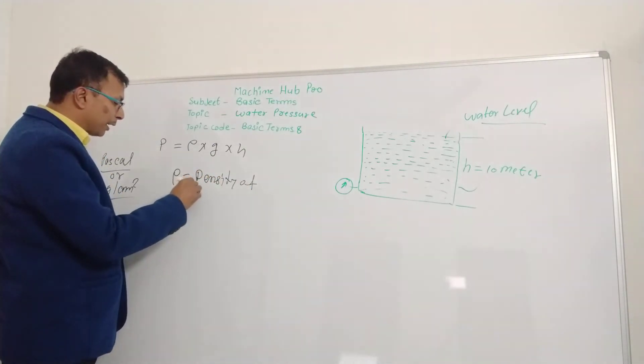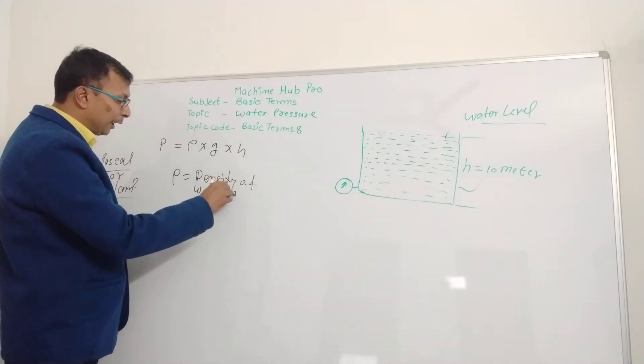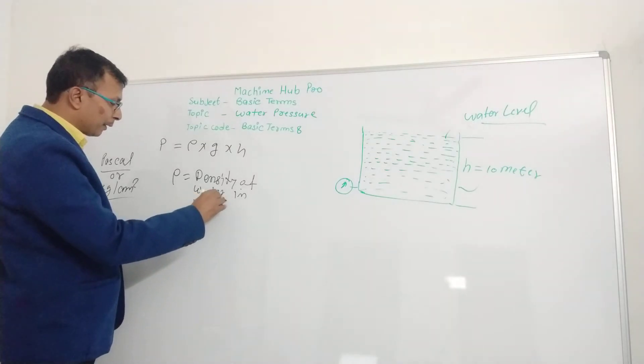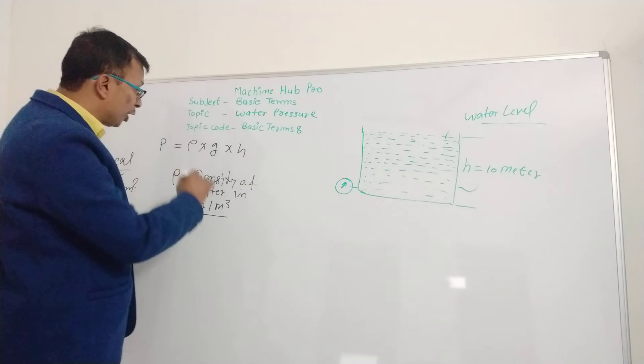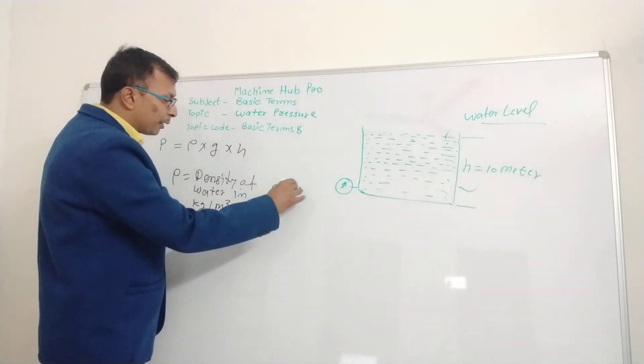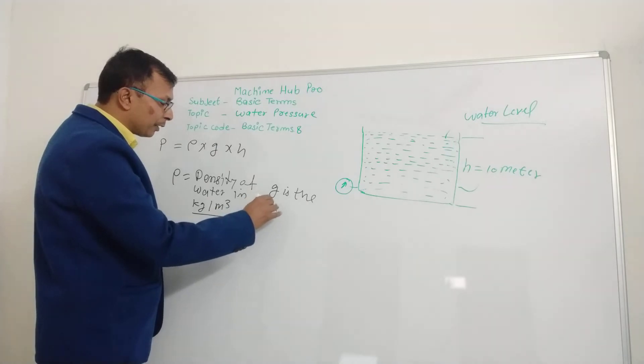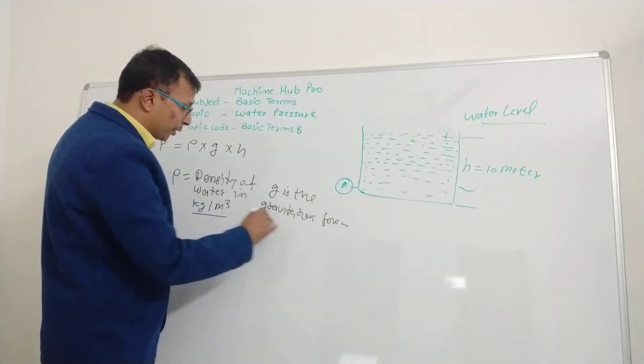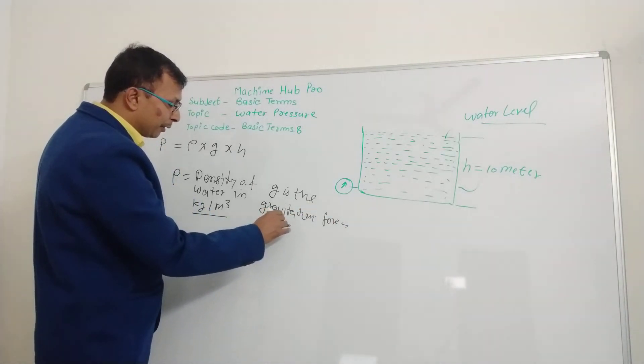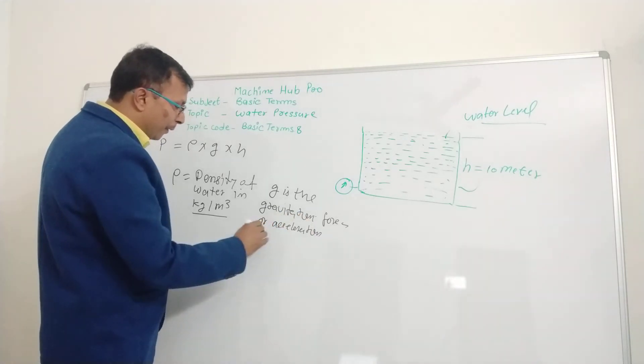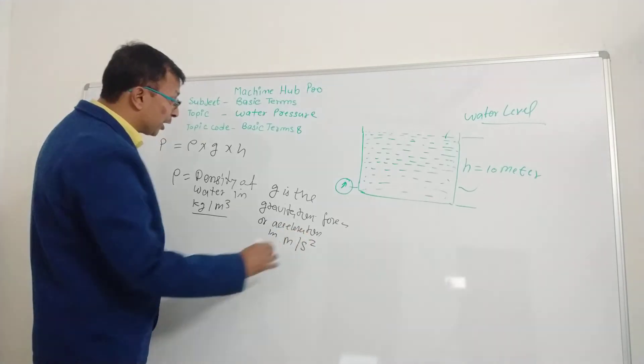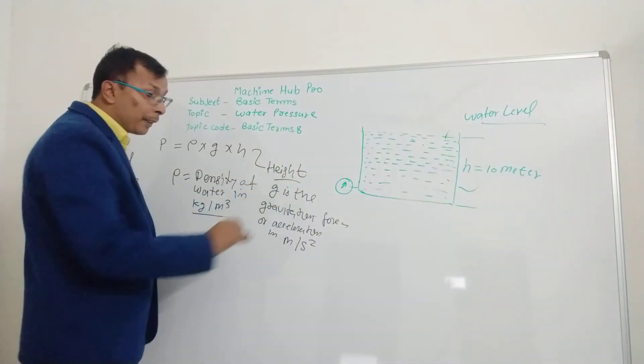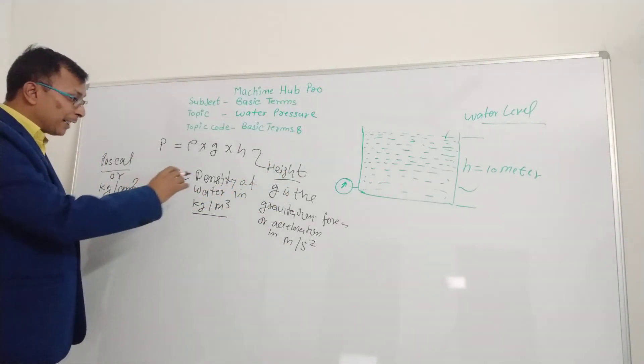Density of water in kg per meter cube. g is the gravitational force or acceleration in meter per second square. At each height, density of water is constant.